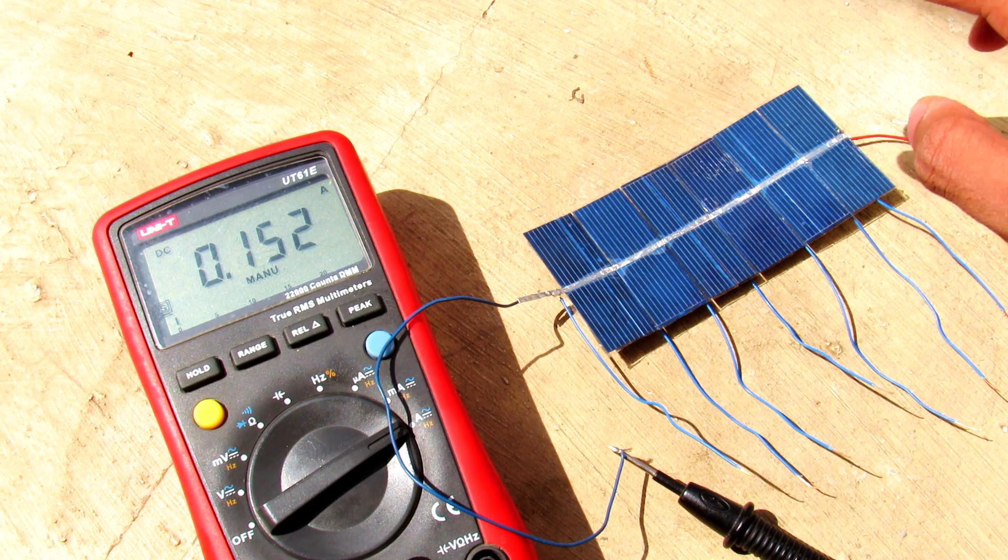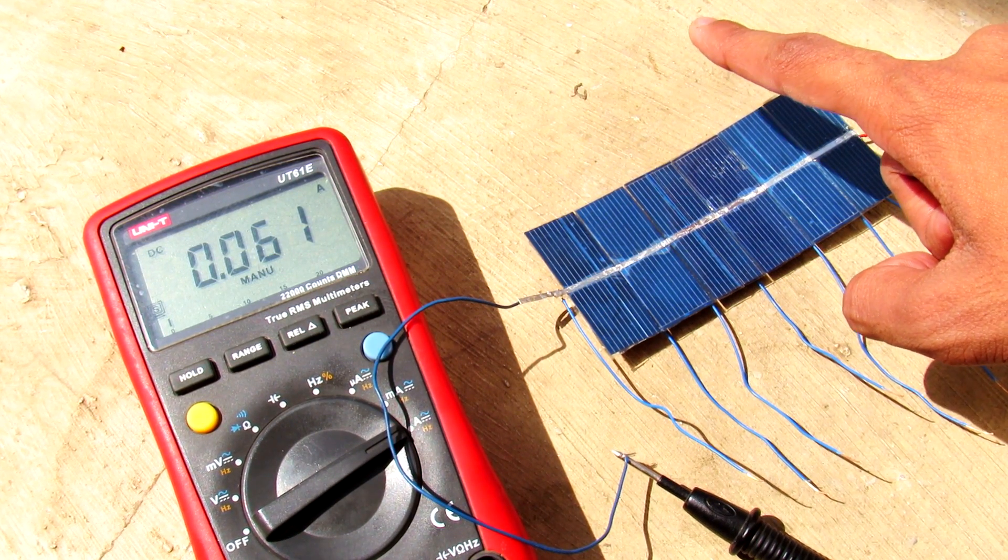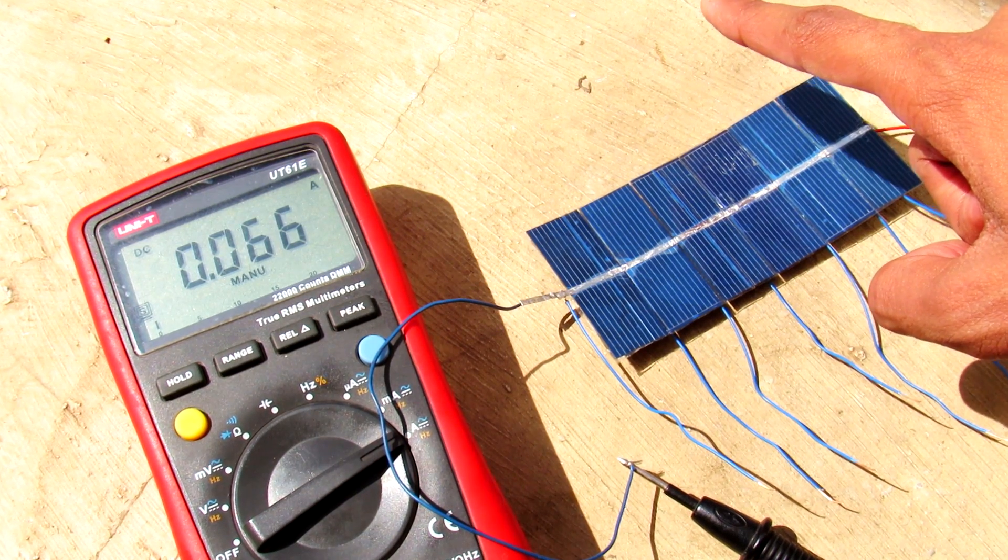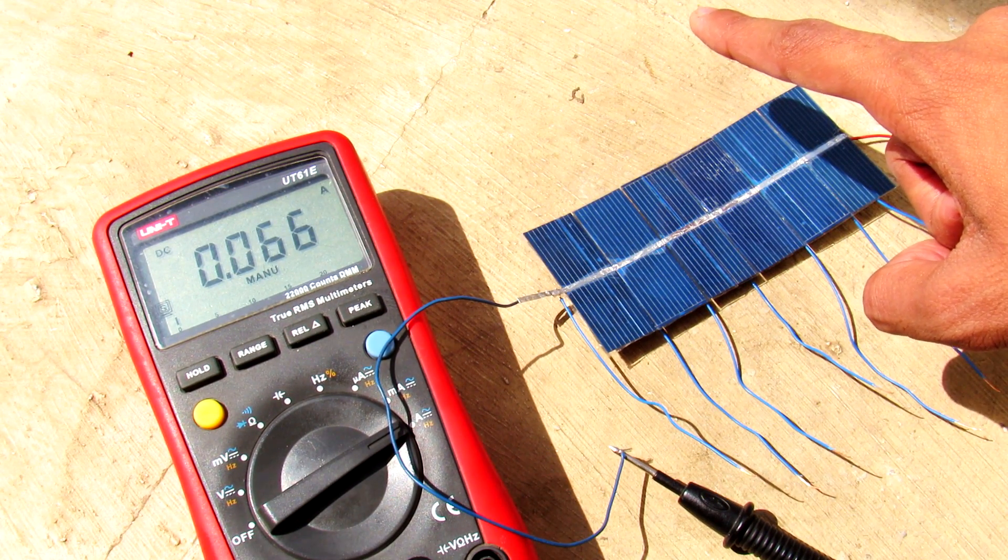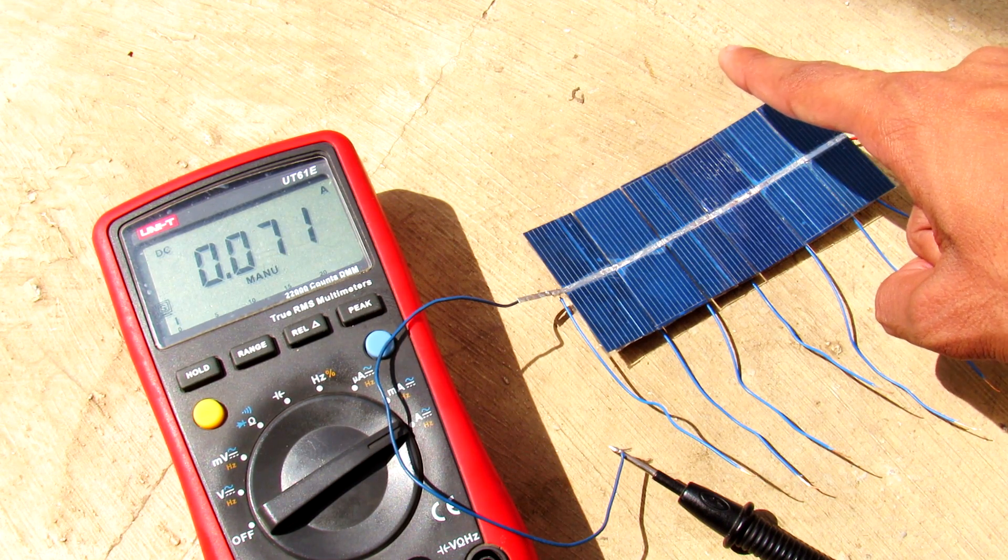So let's see what will happen when I cast a shadow onto one of the cells. You can see that current is dropping to about half. Now I am just casting a shadow on one cell, but you can see the current has almost dropped to half of its original value.